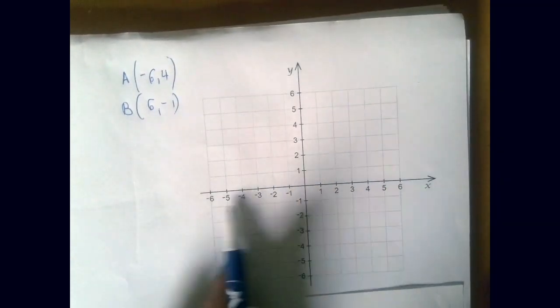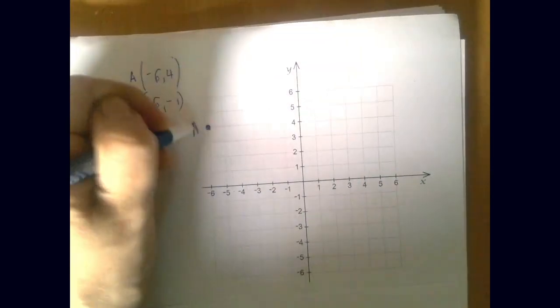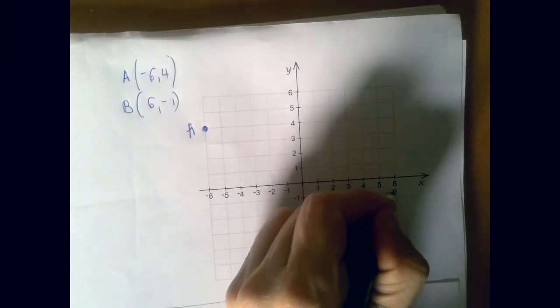A is (-6, 4), that's A, and B is (6, -1). Okay.